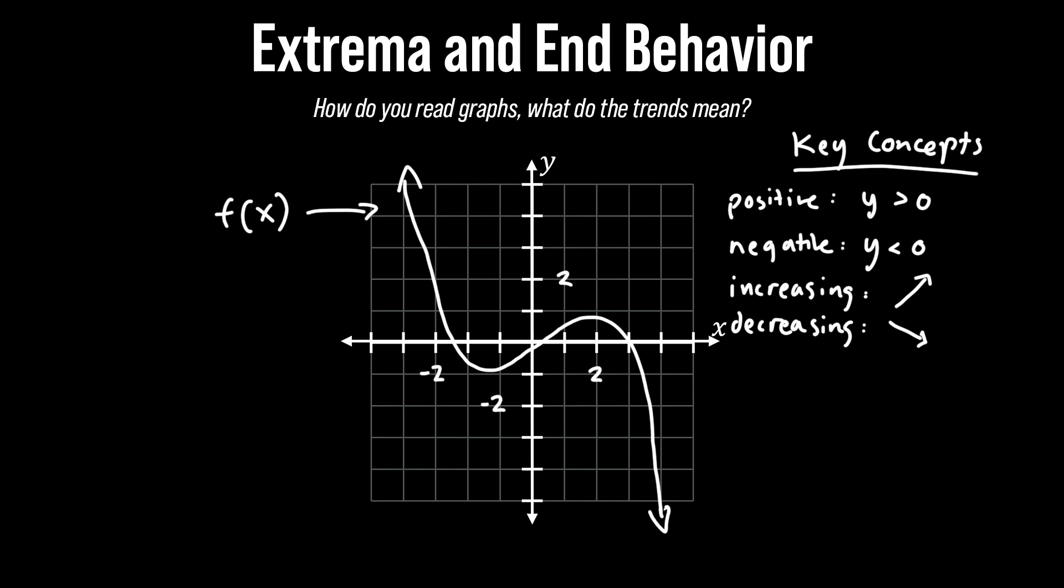So here we define the key concepts. Anything positive is where the graph is above the x-axis which means y is going to be positive and anything negative means that y is going to be negative and the graph is increasing when the trend is upwards and decreasing when the trend is downwards.